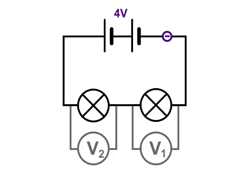This is a quick one about potential difference in series circuits. This is a series circuit — it's a simple loop. The components just come one after each other.